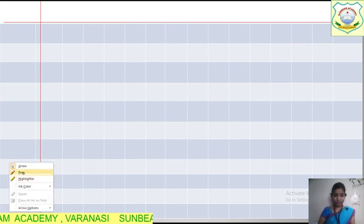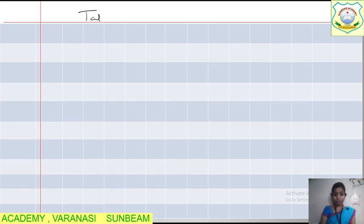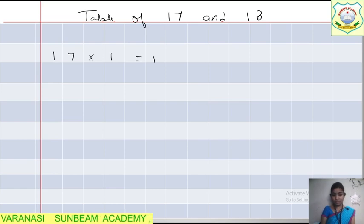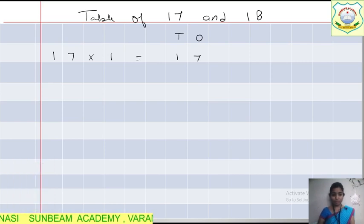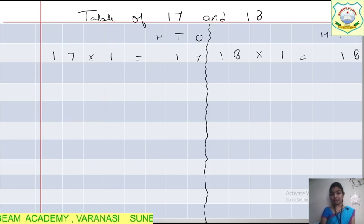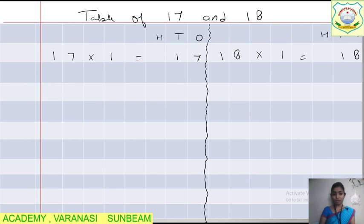Tables of 15 and 16 are done. Now let's move to the table of 17 and 18, and then 19 and 20. Today's homework is to learn and complete this work. Write the heading: Table of 17 and 18. In the same way, make 3 columns — 1s, 10s, and 100 — for both 17 and 18.